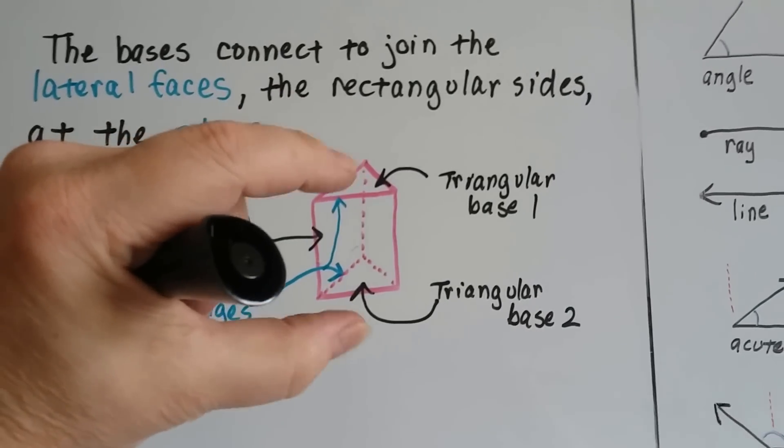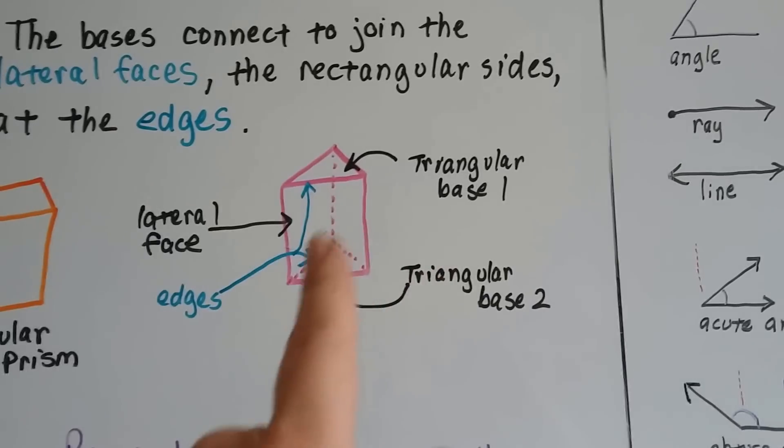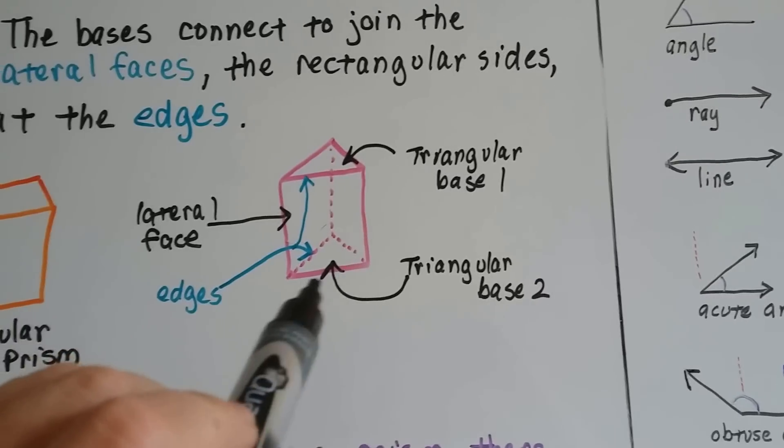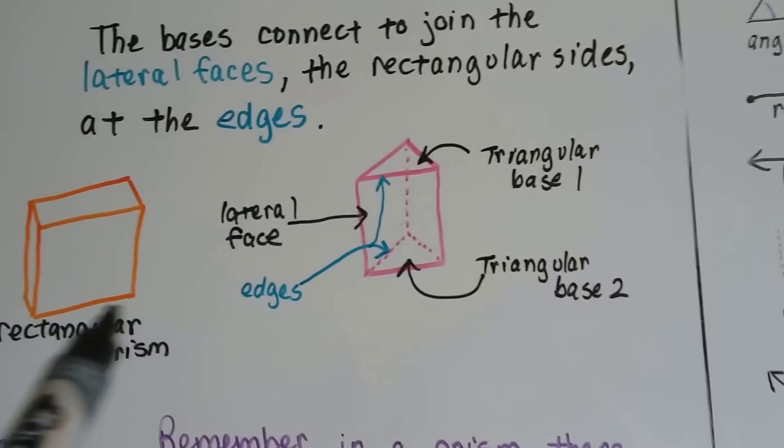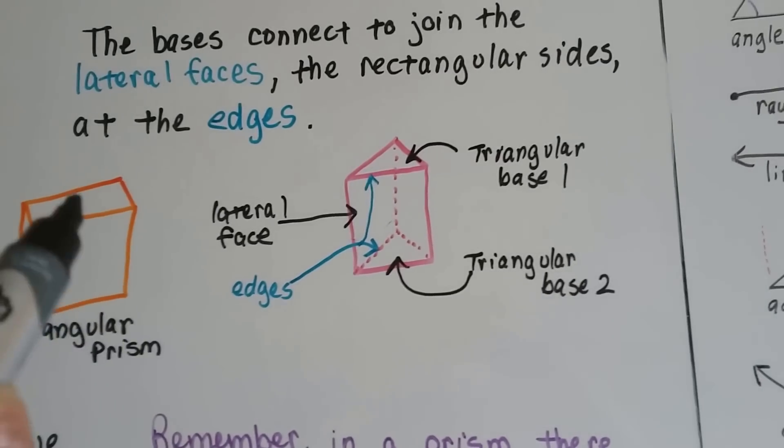On the triangular prism, base 1 and base 2 are the top and bottom here, and then each one of these rectangles is a lateral side. Where this base joins the lateral side is called an edge. Here's an edge, and here's an edge—it's where this side meets the base.